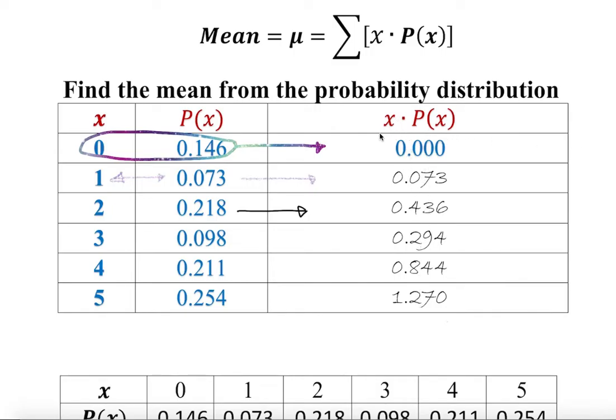Now this summation means you add all of these products. Once we add all of this with any simple calculator, we get approximately 2.917. This is the sum of x times probability of x, which is the mean.